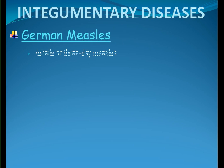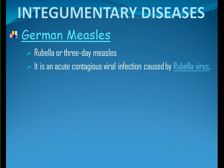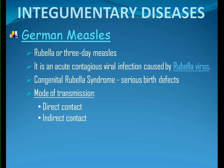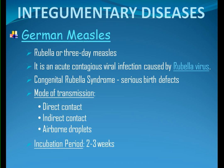German measles. It is also called rubella or three-day measles. It is an acute, contagious viral infection caused by the rubella virus. It has milder symptoms compared to measles, but it can cause congenital rubella syndrome if present during pregnancy, and serious birth defects may occur. Mode of transmission: direct contact with infectious droplets, indirect contact with contaminated surfaces, and airborne droplets when the infected person coughs or sneezes. The incubation period is 2 to 3 weeks, and the most infectious period is usually one to five days after the rashes appear.